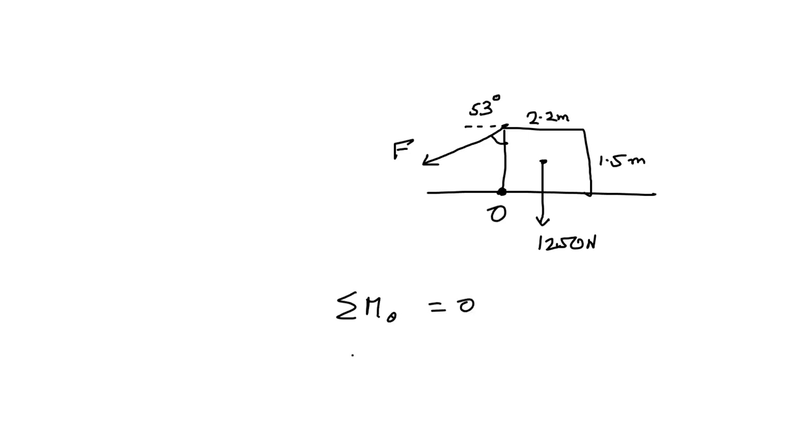times the distance of 1.5 meters. This should balance the weight moment, which is 1250 times 2.2 divided by 2, the distance from the center to the pivot point.